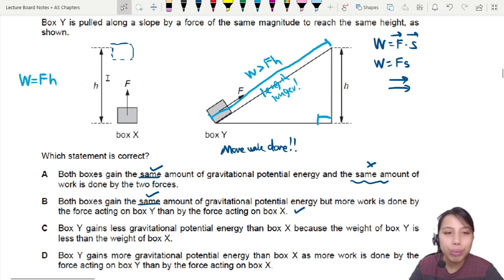This one only moves up a distance H, so not as much. So likely the answer is B, but we check C and D also, just in case. C says box Y gains less GPE than box X. No. You start at the bottom, you move up to the top. Same height increase. No.